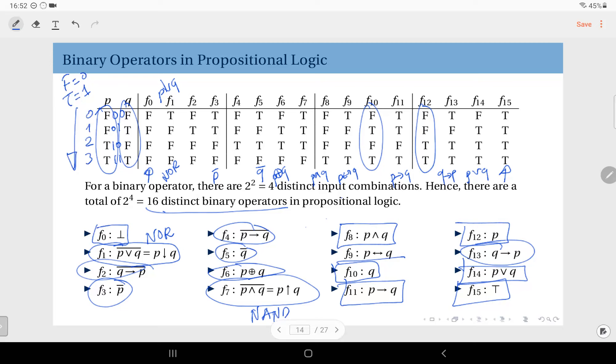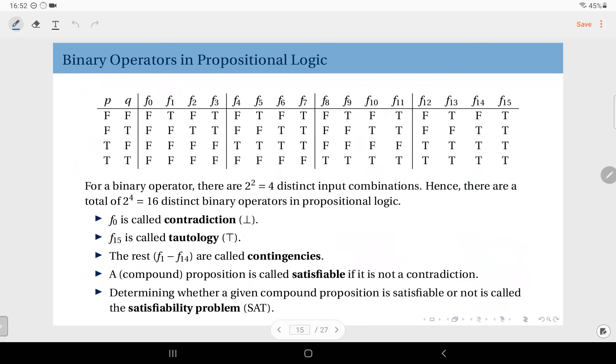So these are all 16 possible binary operators in propositional logic. As I said, this one is called the contradiction. This one is called tautology. Always true. Regardless of the inputs. And the remaining ones, these 14, we call contingencies.